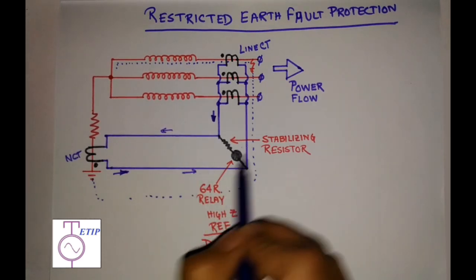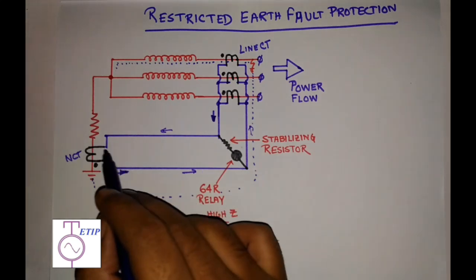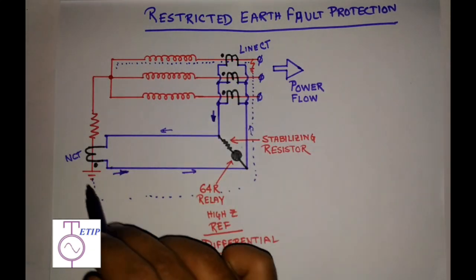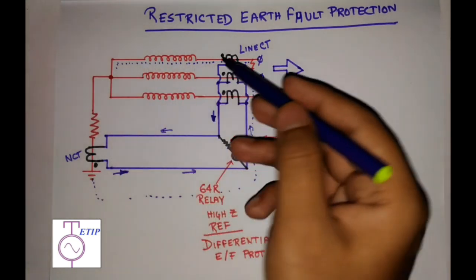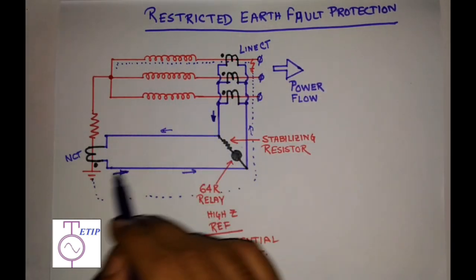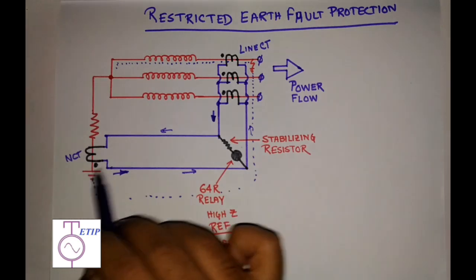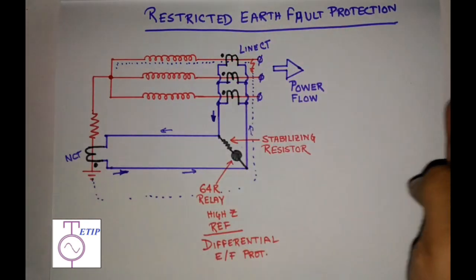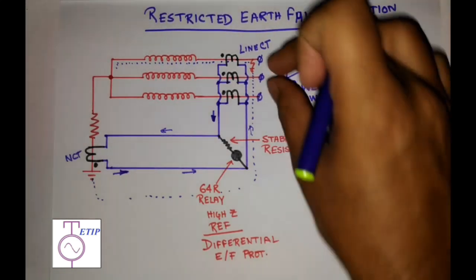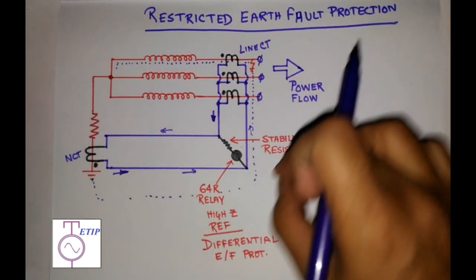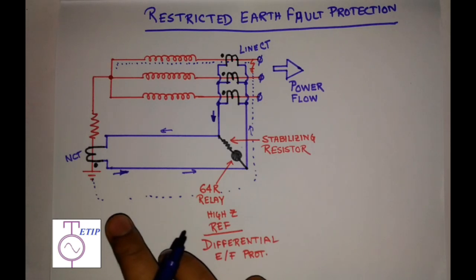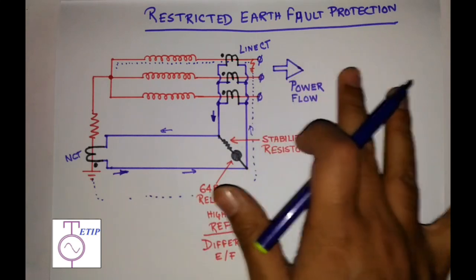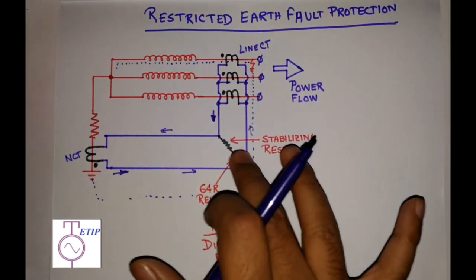Since the magnitude of these two currents is the same — because the same current entering the line CT is returning through the neutral — their secondary reflections will be equal. Due to the CT polarity connection, no current will flow through the relay coil. So for any earth fault outside of this zone, whether it is a phase-to-earth or a two-phase-to-earth fault, this relay will not operate.